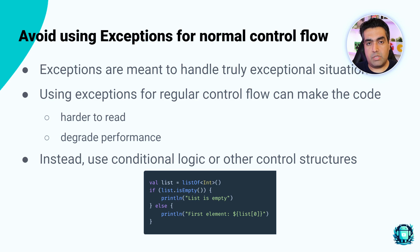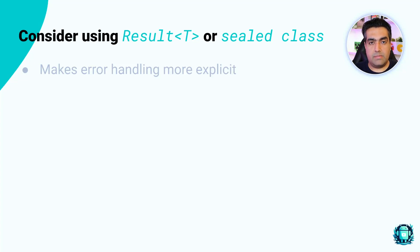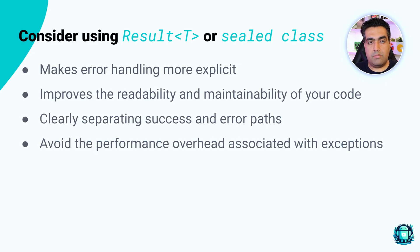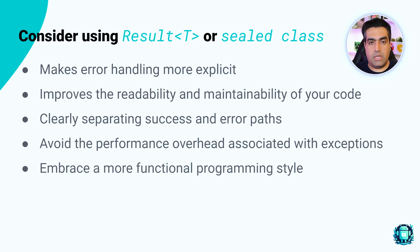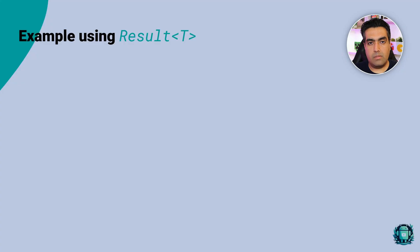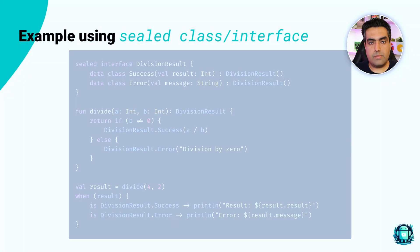For example, instead of throwing an exception when a list is empty, you could use a conditional check. Consider using Result or a sealed class. This approach not only makes error handling more explicit but also improves readability and maintainability. By clearly separating success and error paths, you can avoid the performance overhead associated with exceptions and embrace a more functional programming style. Here is an example using Result, which allows us to use fold function to handle both onSuccess and onFailure. And here is the same example but using a sealed interface, which allows us to have different result cases and handle them in a when block.